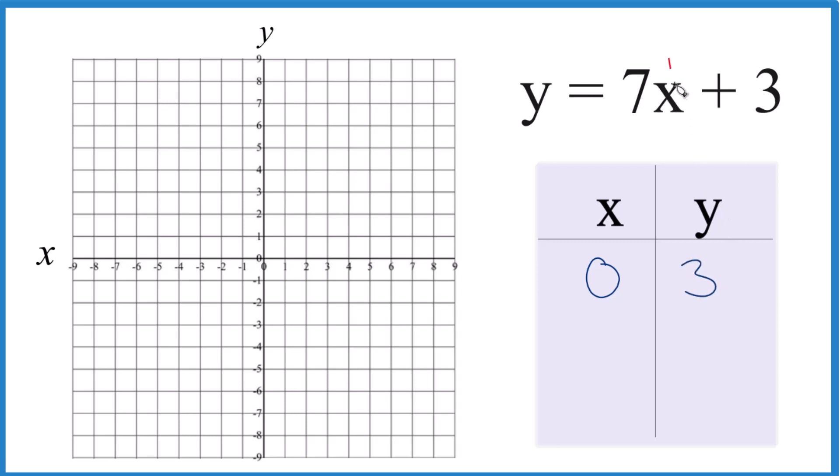I could put 1 in for x, so if we had 7 times 1, that's 7 plus 3, that gives us 10, but that's going to be off the graph, so I kind of don't want to do that. How about negative 1? 7 times negative 1 is negative 7, negative 7 plus 3 gives us negative 4.